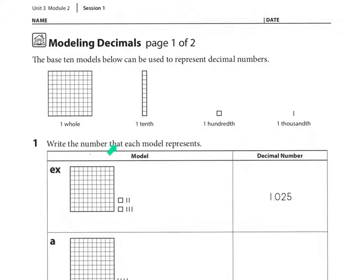So we're going to write the number that each model represents. Here's an example done for you. We see one whole, two hundredths, and five thousandths. And then we write it as a decimal, one and twenty-five thousandths.